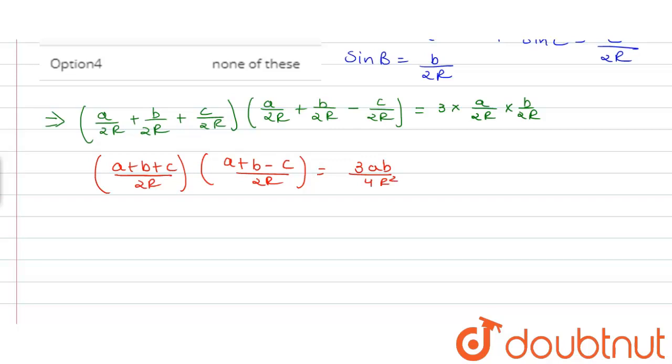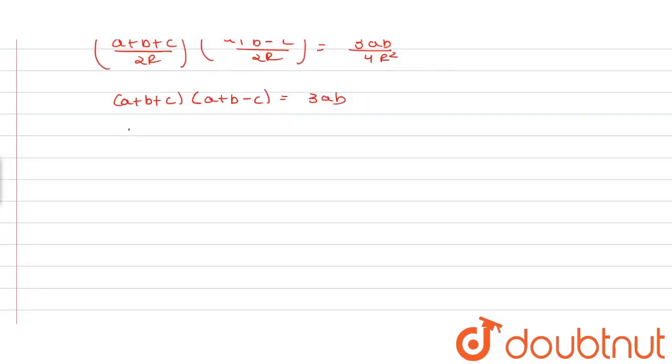By further solving this we get (A + B + C)(A + B - C) is equal to 3AB. By further solving this we get A squared plus 2AB plus B squared minus C squared is equal to 3AB.